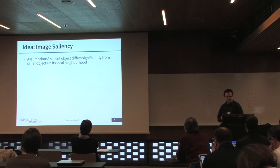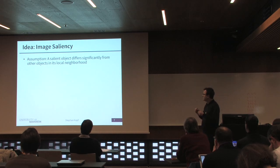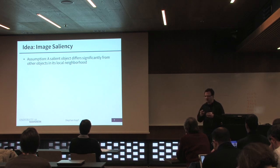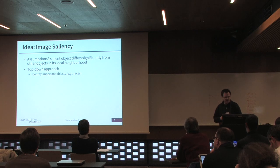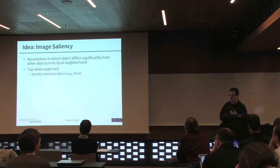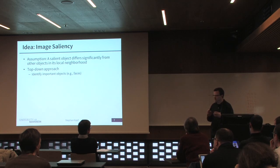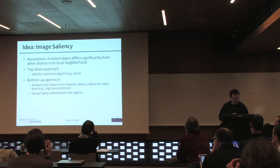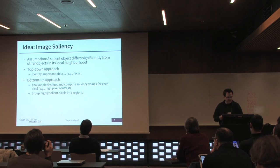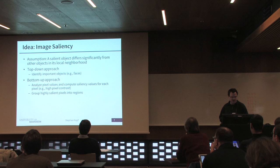The main idea of image saliency is that a salient object significantly differs from all other objects in the local neighborhood. There are two general approaches. The first is a top-down approach — try to identify the most important object, like face recognition, and then look at the location of the person. Or use bottom-up approaches: look at pixel values, analyze them, merge important regions or pixel areas, and then get the saliency region. We use this bottom-up approach.